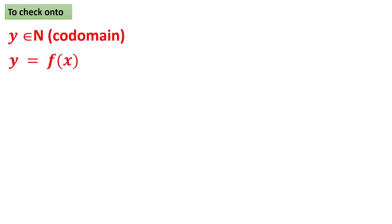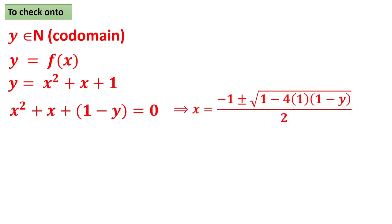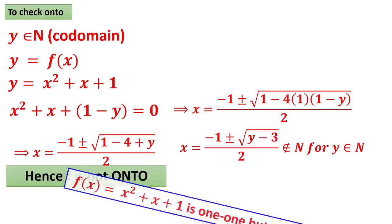To prove it is not onto: take y from the codomain and set y = f(x) = x²+x+1. Convert to a quadratic equation in x and solve using the quadratic formula: x = (minus 1 ± √(y-3)) / 2. Now check whether this gives a natural number. Since y is a natural number, y minus 3 may not be positive — it could be negative — so x cannot be a natural number. Therefore it is not onto. We have proved it is one-one but not onto.